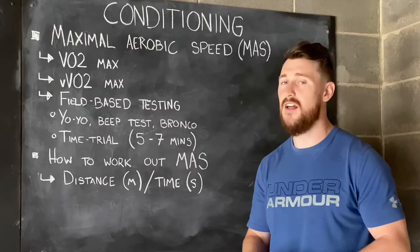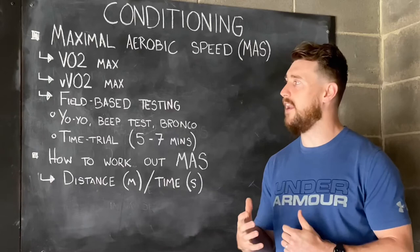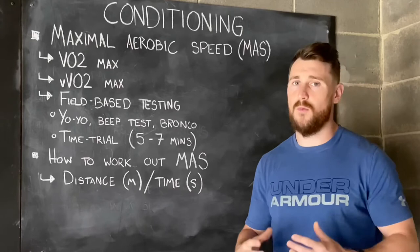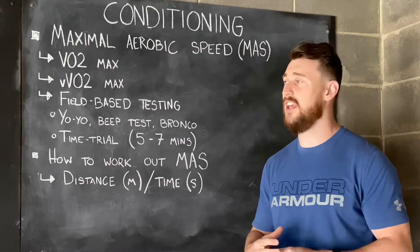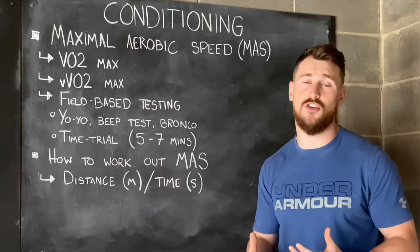The graded exercise test in a research laboratory is a pretty arduous process and it's not very practical for coaches and athletes. So what we do is look at different alternative tests to get field-based testing measures. One of the best ways that we can look at aerobic fitness and endurance is through a maximal aerobic speed test, and maximal aerobic speed is the field-based version of VVO2max — it is the initial running velocity that you can achieve whilst operating under that VO2max condition.